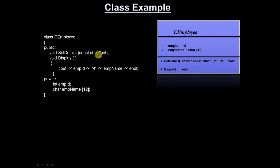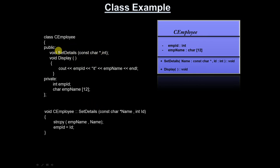Now for set_details, the definition is given outside the class. Take the same prototype: void, then place the scope resolution operator with class name CEmployee before set_details. Inside, use strcpy(emp_name, name) and emp_id = id to copy the passed values. The class design is now complete. The next step is to create objects in the main function.